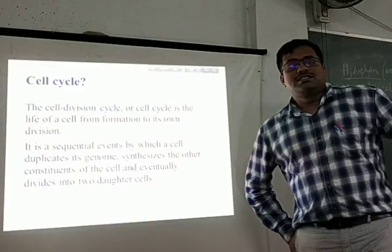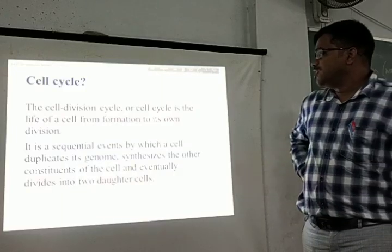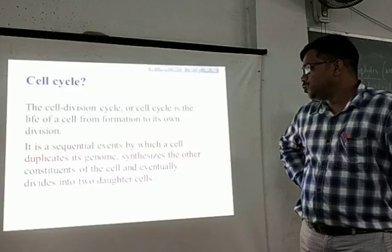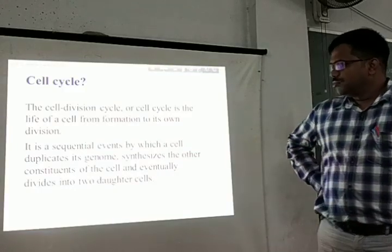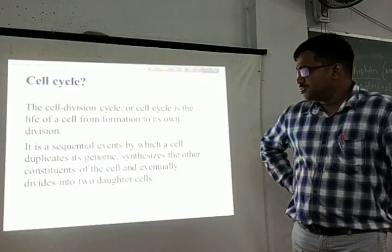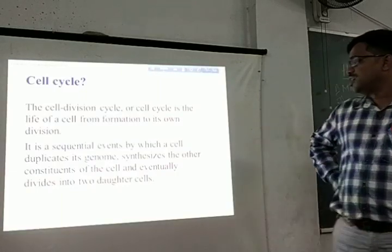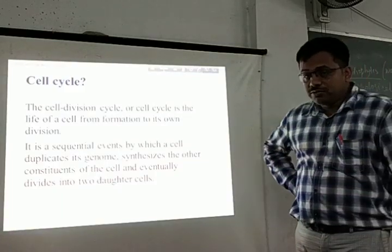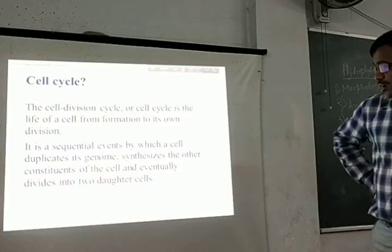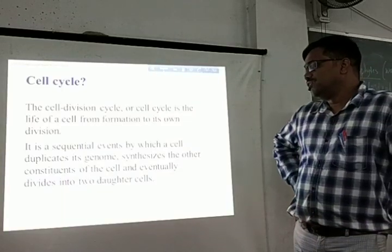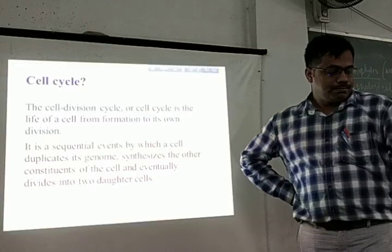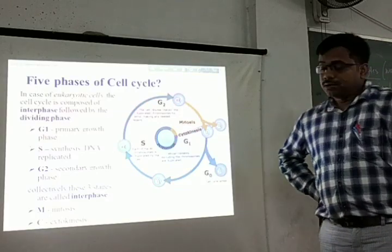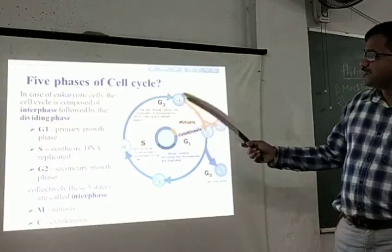What is the cell cycle? The cell cycle, or cell division cycle, is the life of a cell from its formation to its own division. It is a sequential event by which a cell replicates its genome, synthesizes other constituents required for cell division, and eventually divides into two daughter cells. These are the diagrammatic representations of the cell cycle.